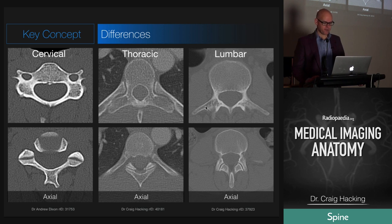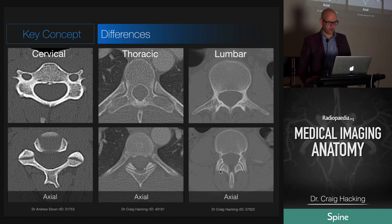The lumbar transverse processes are long and slender. And look at these facet joints — see how they change orientation. In the cervical spine they're quite horizontal, then they change angle, and then they angle away in the lumbar spine.